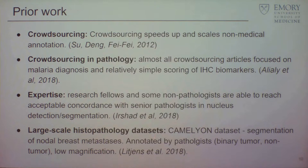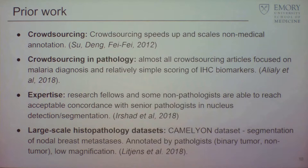There is one large-scale dataset known as the Camelyon dataset, published in 2016. It looks at examining small pieces of cancer in a lymph node when breast cancer spreads to lymph nodes. But it was not annotated by non-experts — it took a huge effort from a whole swath of pathologists, was done at low power, and is a binary problem, so it's not really a proper annotation problem.